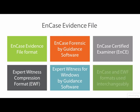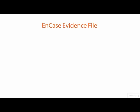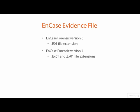The EnCase evidence file format and Expert Witness Compression Format are referred to interchangeably, and both support many of the same features, but do differ in their internal file structures. There are actually two modern versions of the EnCase evidence file format: the EnCase evidence file produced by EnCase Forensic version 6 that uses the .e01 file extension, and the EnCase evidence file produced by EnCase version 7 that uses the .ex01 and .lx01 file extensions, known as the EnCase evidence file format version 2.